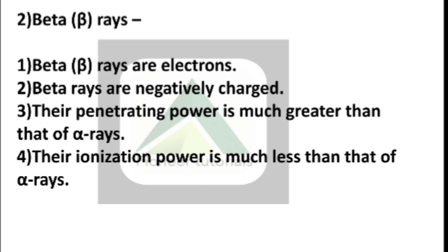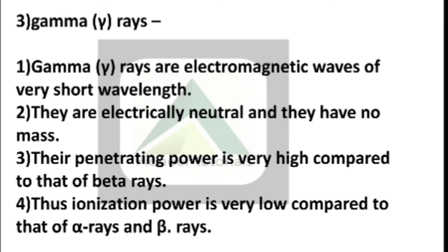Third ray is gamma rays. Gamma rays are electromagnetic waves of very short wavelength. They are electrically neutral and they have no mass. Their penetrating power is very high compared to that of beta rays. Their ionization power is very low compared to that of alpha and beta rays.